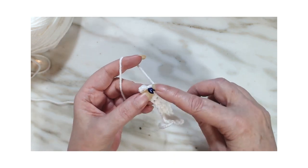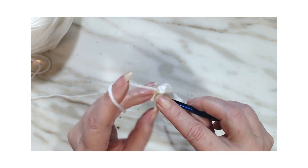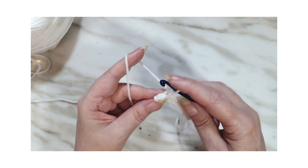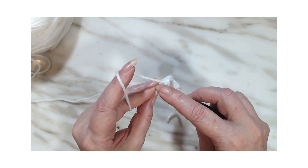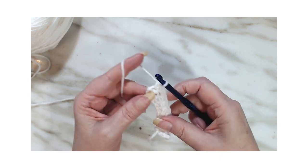And in the 10th one, we are going to go through two loops. Make sure you go through two loops and you'll understand why when we get done. So go through two and make a single crochet.